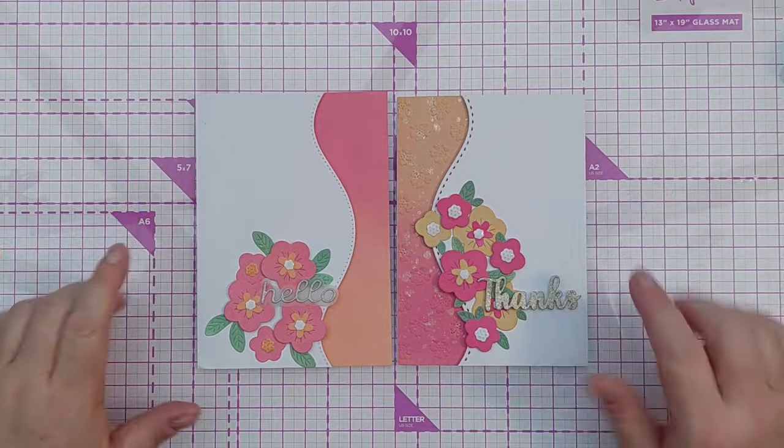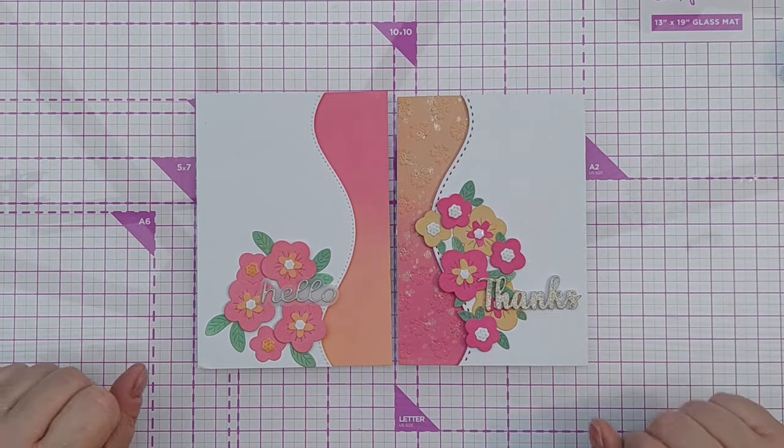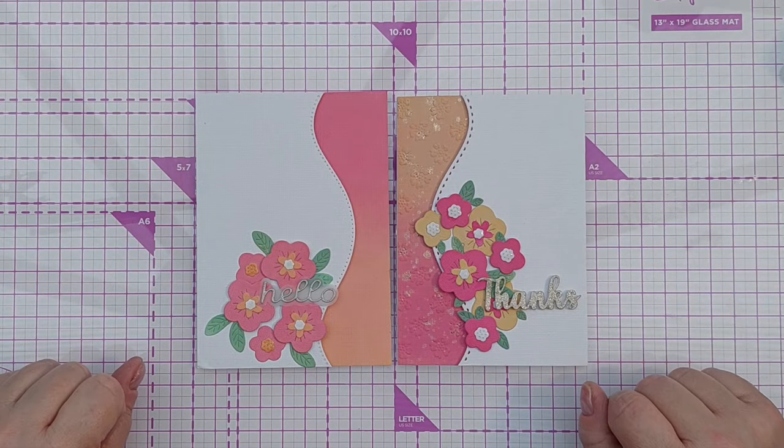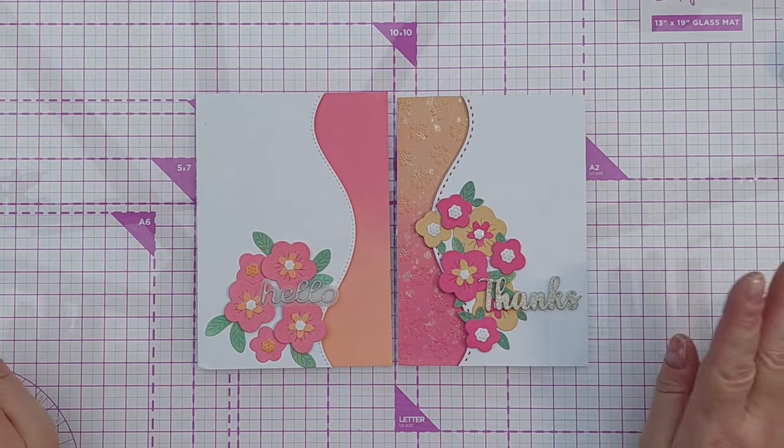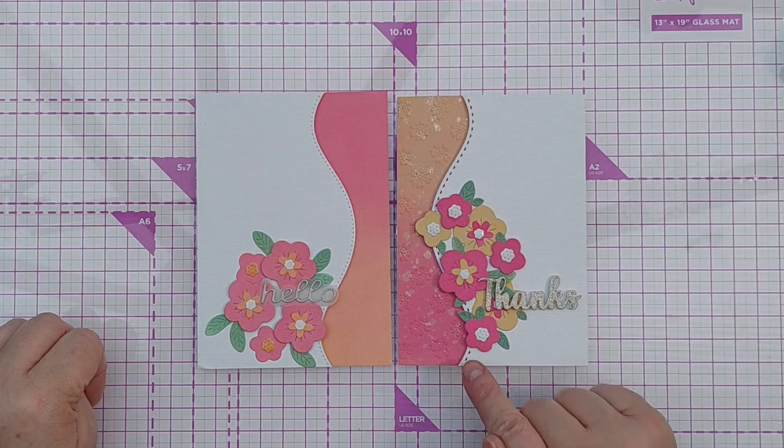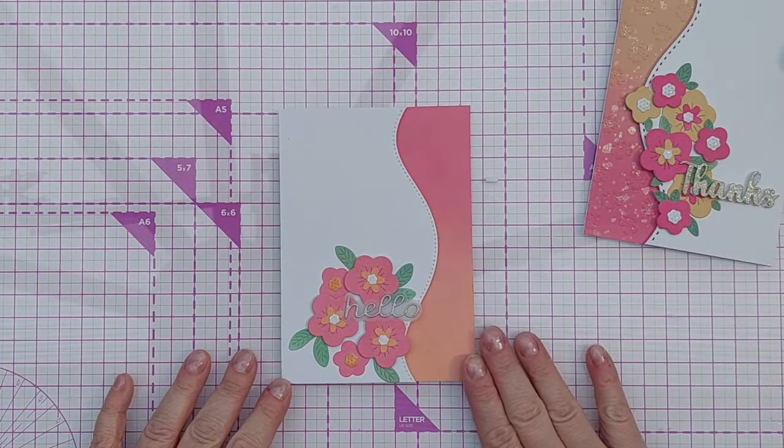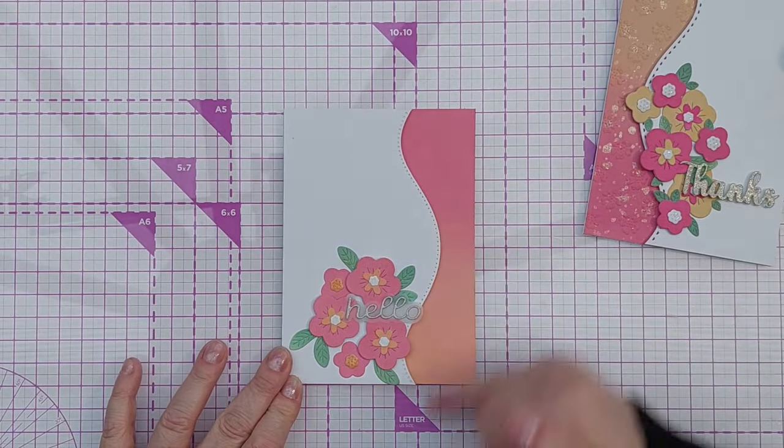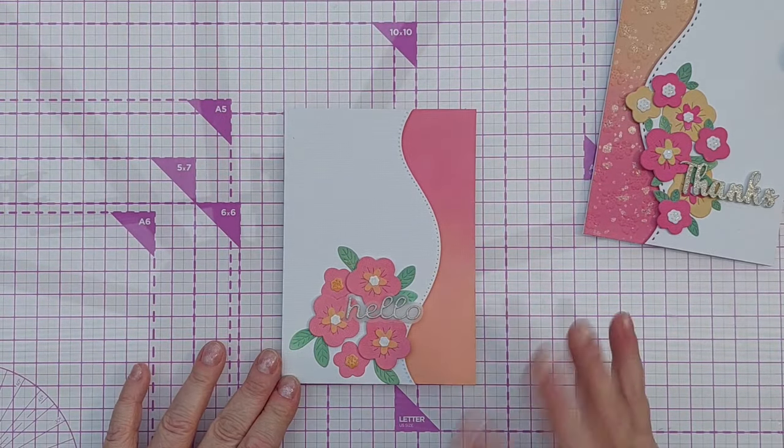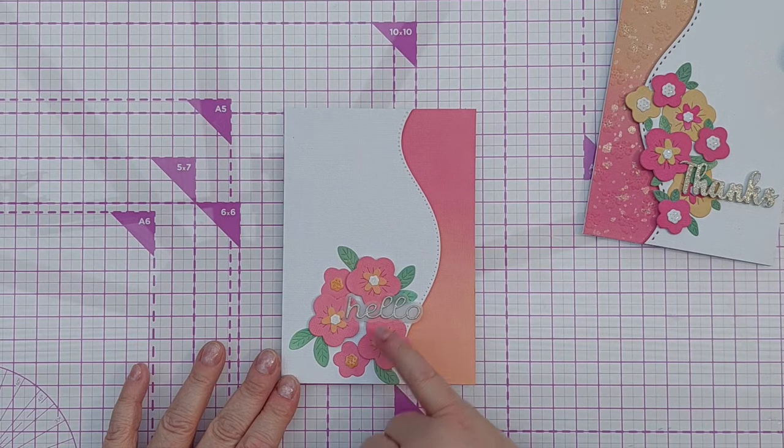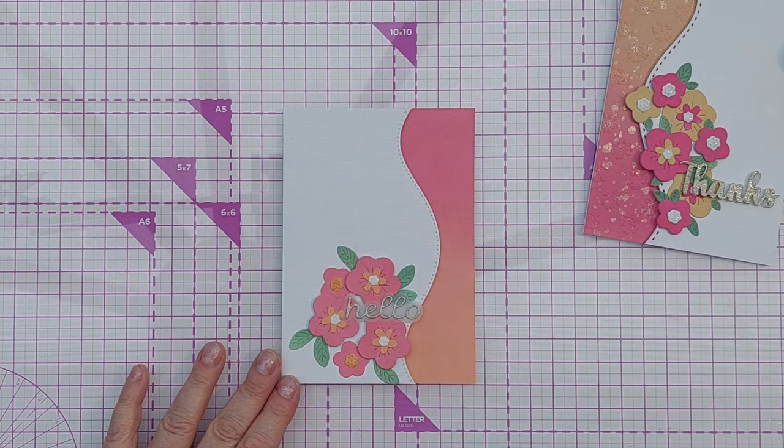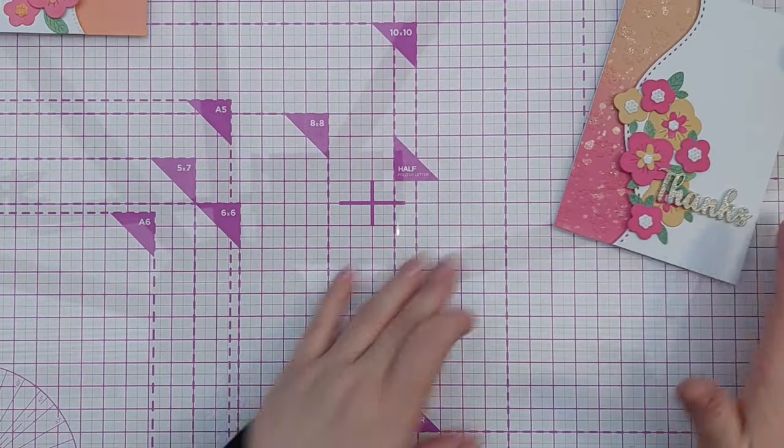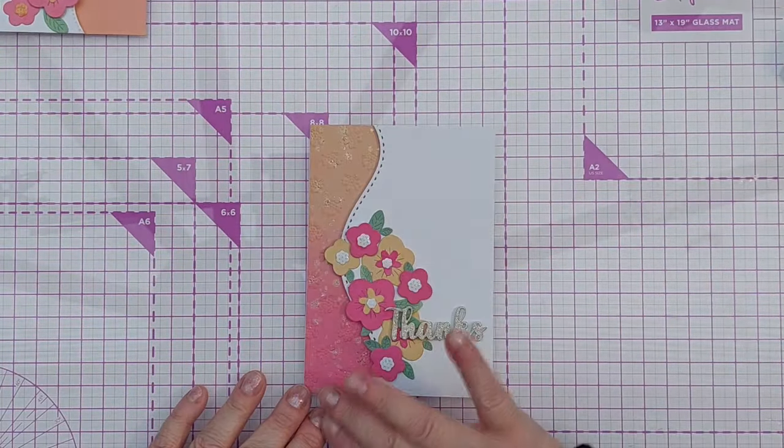So there we go, two cards made with essentially the same supplies, slightly different colors, slightly different arrangement. Which one are you leaning towards? I'm leaning towards this one. I really liked this when I made it and I still like it, but I'm thinking although I do like that blend, it's a little plain and I'm not overly keen on just having sort of one color of flower.